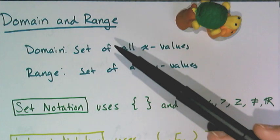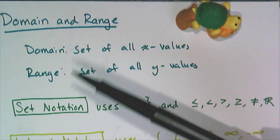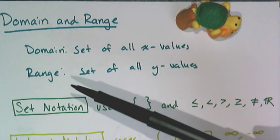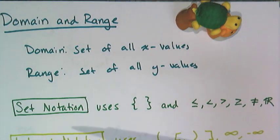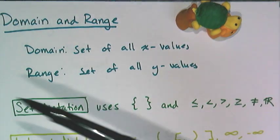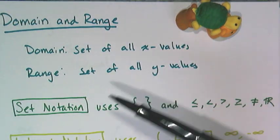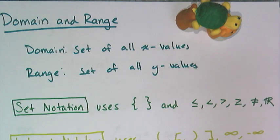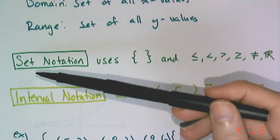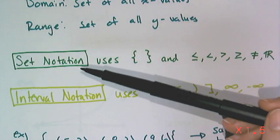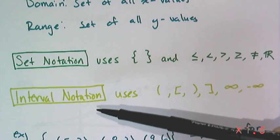In this video, we're going to talk about domain and range — not the definition, more like finding and writing domain and range. Let's talk about how to express domain and range. There are two main ways: one way that uses set notation, and the other way that uses interval notation.